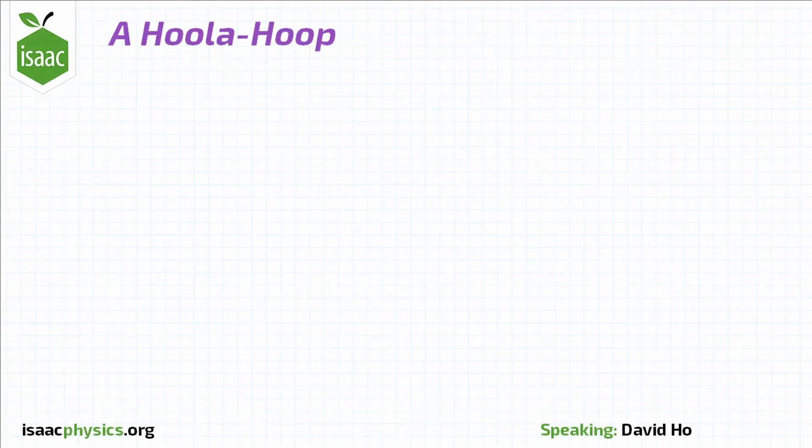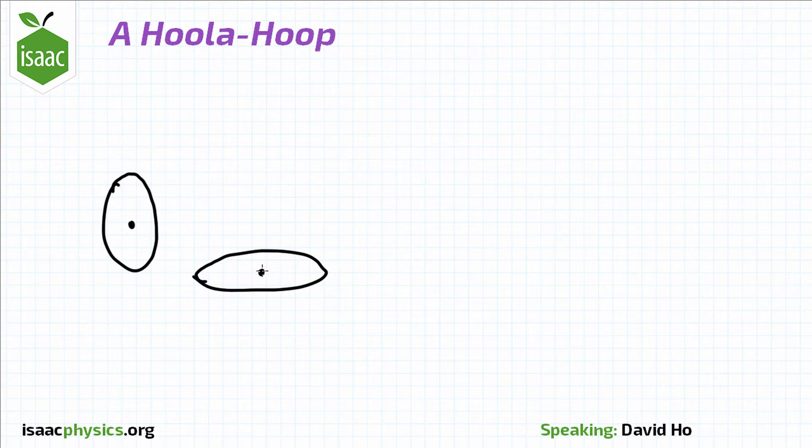We want to work out the change in gravitational potential energy when the hoop moves from a vertical position, with the centre of mass here, to a horizontal position, with the centre of mass here.